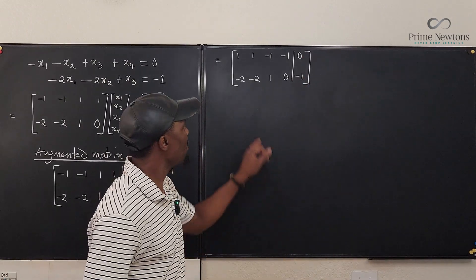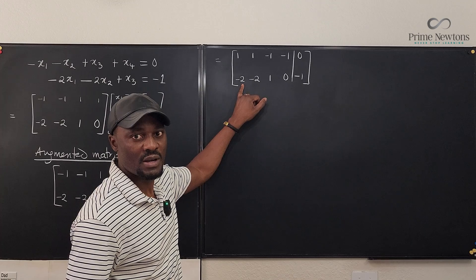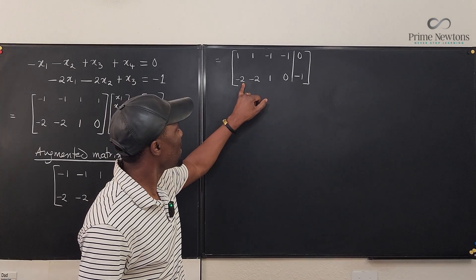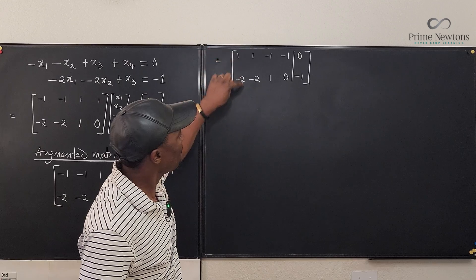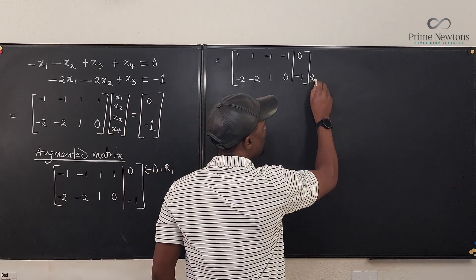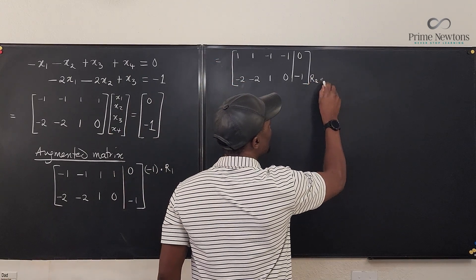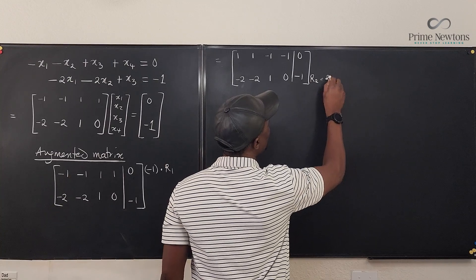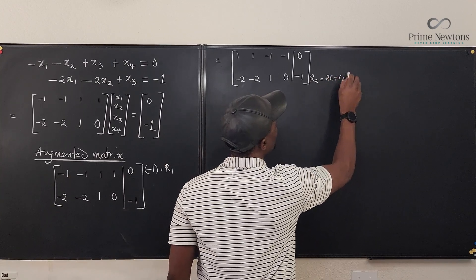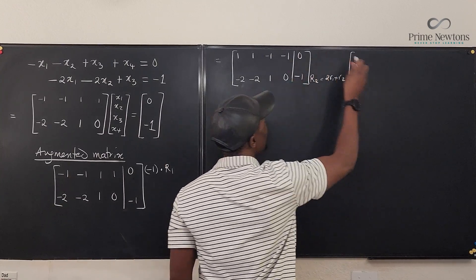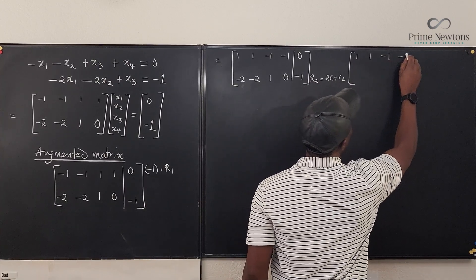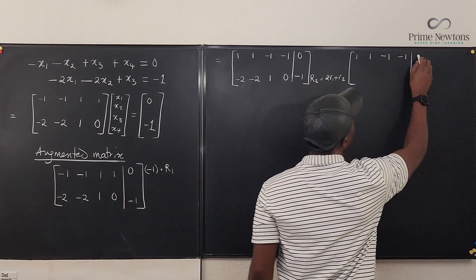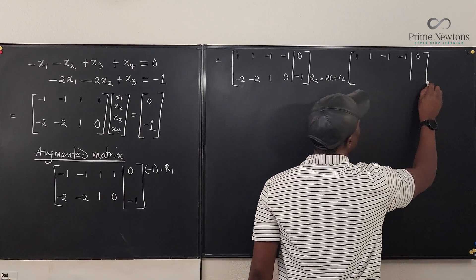Okay. So now remember the mission is to generate a zero here. If we generate zeros here, what do we get? I'm going to add two of this to this. So I'm going to say that row two is equal to two of row one plus row two. So what do we have? We're keeping row one. So we have one, one, minus one, minus one. And then we need zero. And that's it.